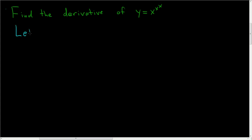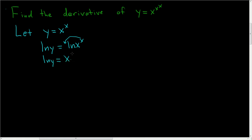So let y equal x to the x — this is a different y, not the original one. To find this derivative, you just take the natural log of both sides. Then you can bring the x downstairs via the power rule, so it's ln y equals x times the natural log of x.